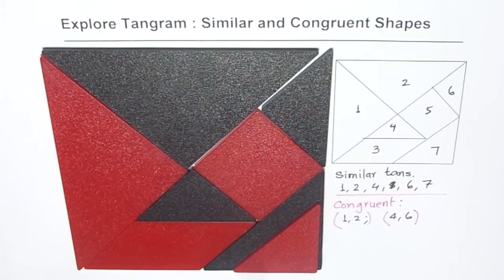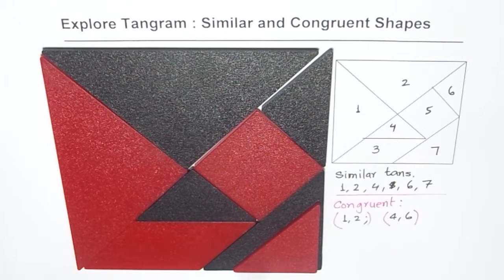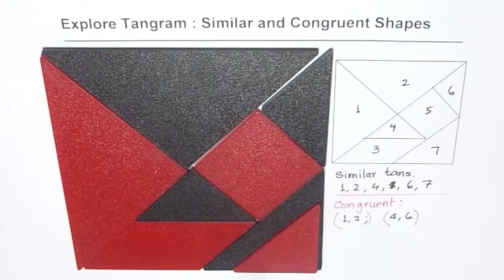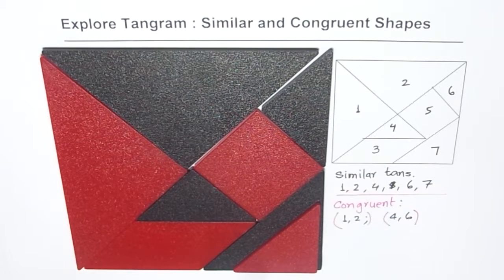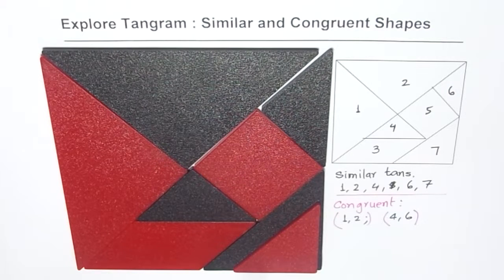I hope with this you understand the similarity between similar and congruent shapes. Now the question is: if two shapes are congruent, will they always be similar — true or false? And if the shapes are similar, will they always be congruent — true or false? Let me know. Thank you and all the best.